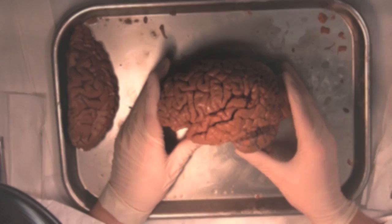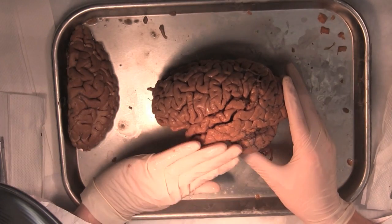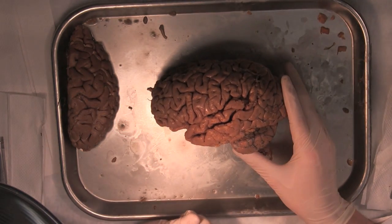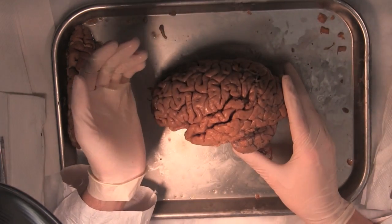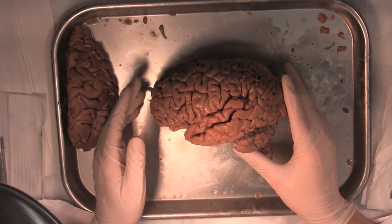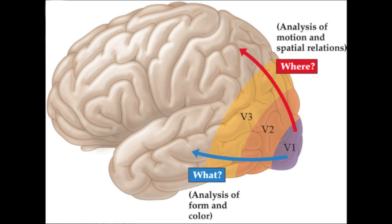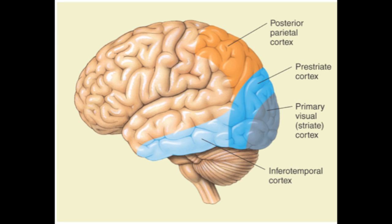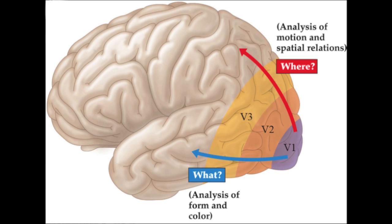After V3, our stream of data takes two paths: the dorsal and ventral streams. The dorsal stream projects to V5, also called MT for Medial Temporal Visual Area, where we detect visual motion in our environment. The dorsal stream is known as the "where" stream because it tracks motion and formulates a visual map of our environment, telling us where things are around us. The ventral stream projects to V4 and inferotemporal cortex, abbreviated IT, where visual object detection finally takes place. For this reason, the ventral stream is known as the "what" stream, since it tells us what is in our visual field.